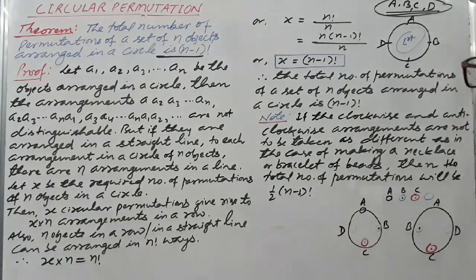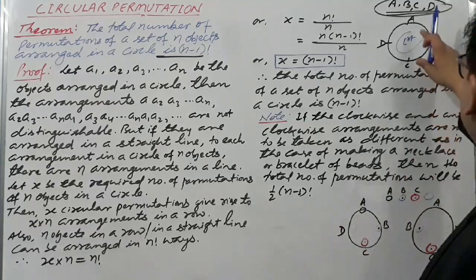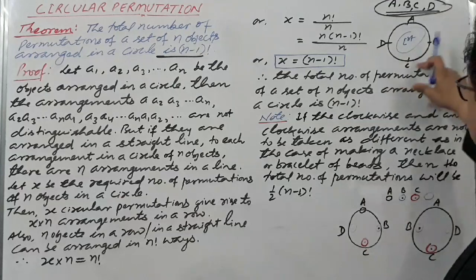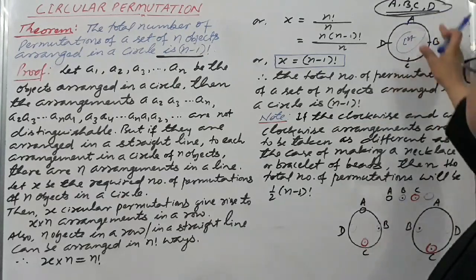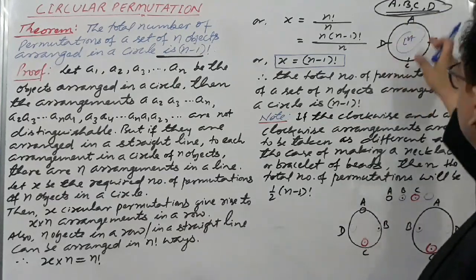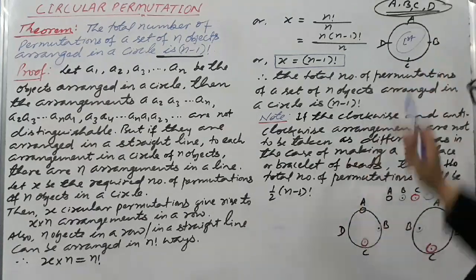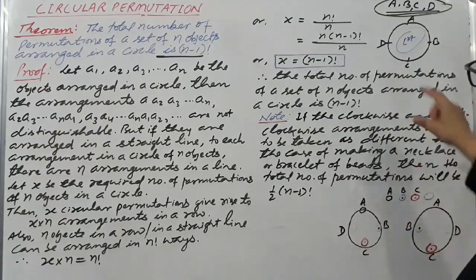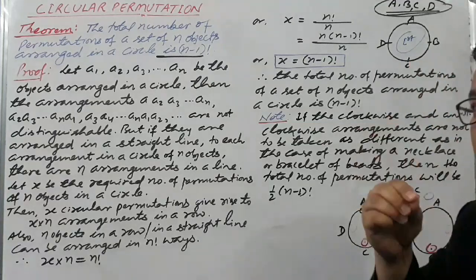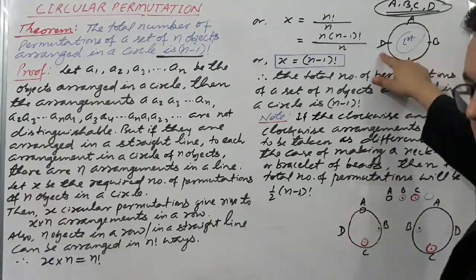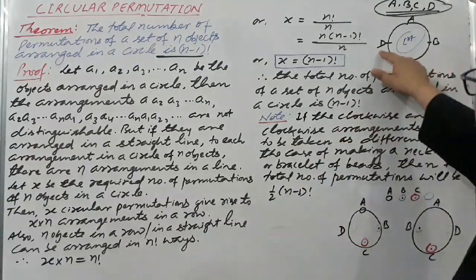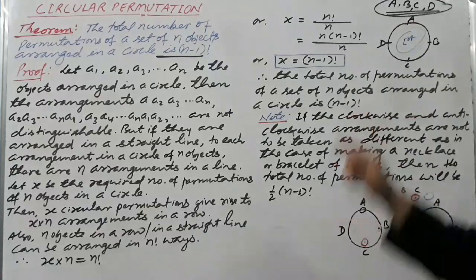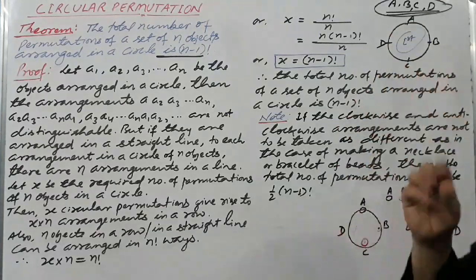Now see here, you can read A, B, C, D. If you read like this: B, C, D, A — that is also a reading. C, D, A, B also. D, A, B, C also. So in how many ways can you read? A, B, C, D — 1; B, C, D, A — 2; C, D, A — 3; D, A, B, C — 4. In four ways you can read.